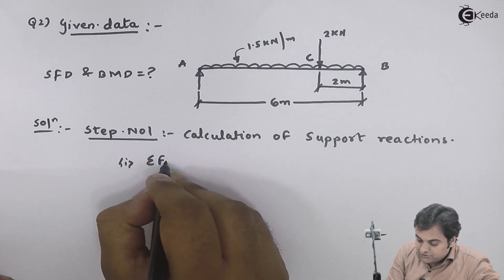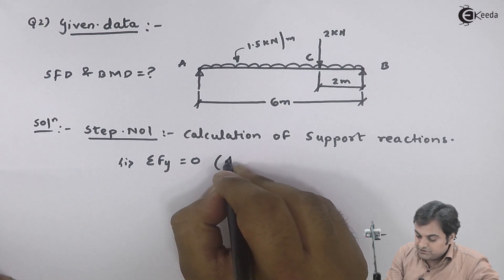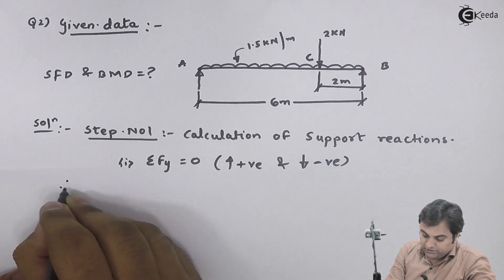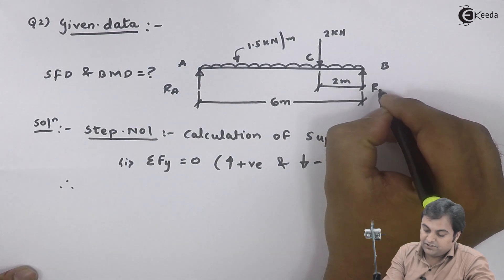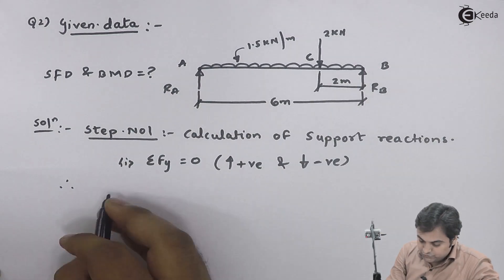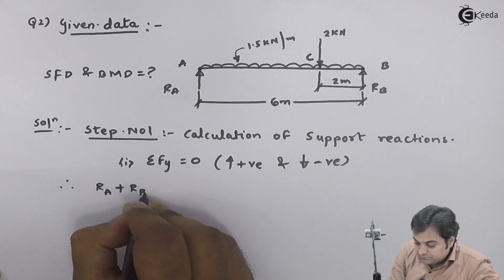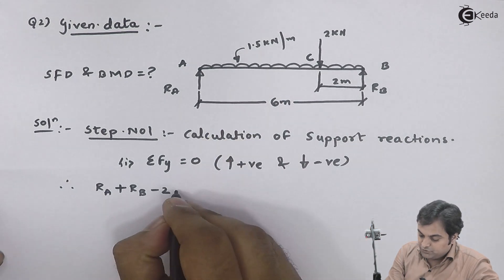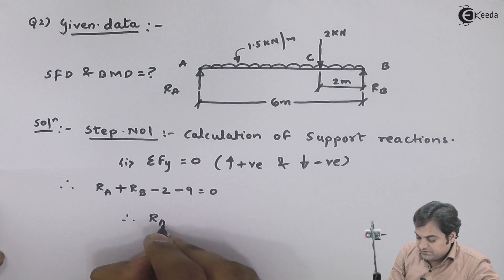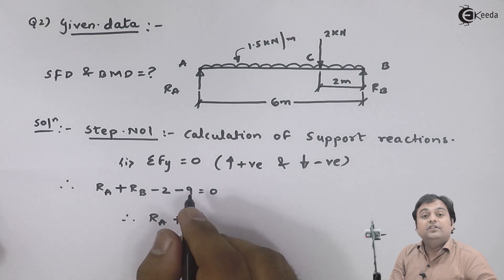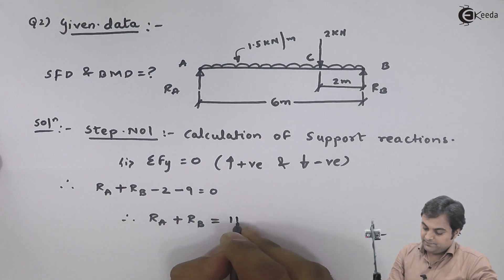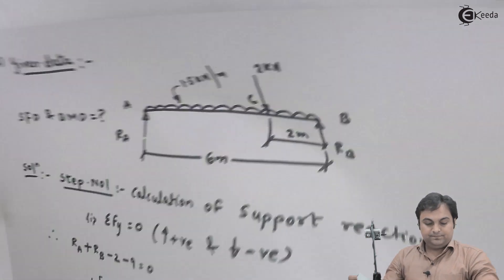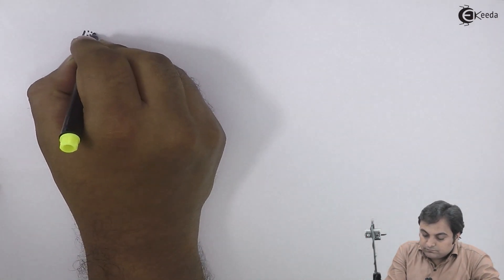The first condition is summation of FY is equal to zero, where upward forces are positive and downward forces are negative. I have reaction at A as RA and reaction at B as RB, both upward. So: RA + RB − 2 − (1.5 × 6) = 0, giving RA + RB = 11 kN. This is equation number one.